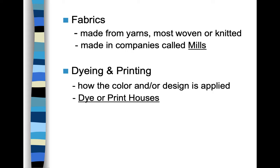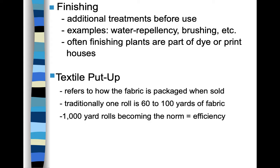Once you have fabric, we talk about how it's colored or printed — dyeing and printing. How color or design is applied to fabric happens in a whole different location called a dye house or print house. So 'mill' refers to where fabric is made; once it leaves the mill it goes to a 'house' where something else happens. These are important terms to remember.